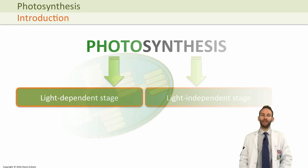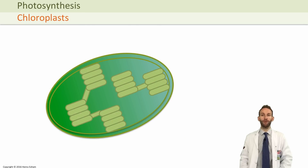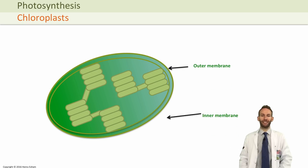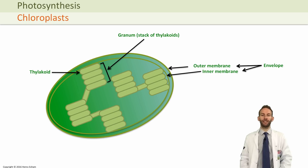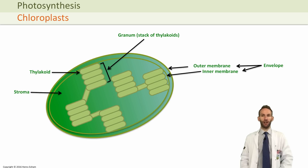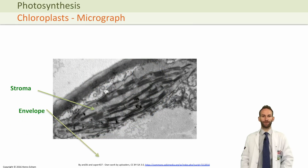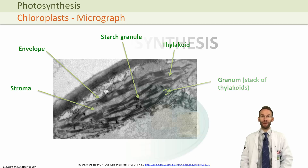To understand photosynthesis we need to recap the structure of chloroplasts. They are a double-membrane organelle with an inner and outer membrane referred to as the envelope. The inner membrane is highly folded into structures called thylakoids, stacked into grana. Surrounding the thylakoids is a fluid called the stroma. You should be able to label both a diagram and an electron micrograph of a chloroplast.